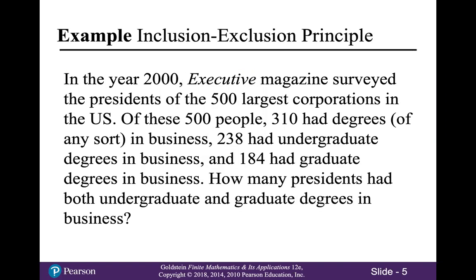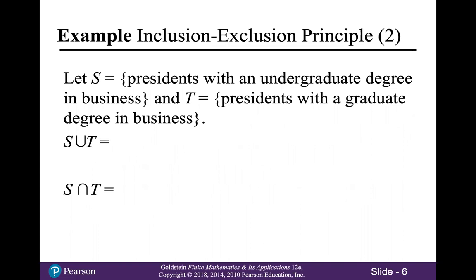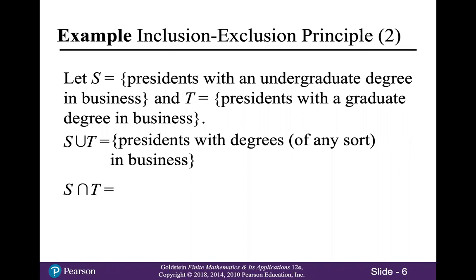For example, in the year 2000, Executive Magazine surveyed the presidents of the 500 largest corporations in the U.S. Of these 500 people, 310 had degrees of any sort in business, 238 had undergraduate degrees in business, and 184 had graduate degrees in business. How many presidents had both undergraduate and graduate degrees in business? So if we let S be the set of all presidents with an undergraduate degree in business, and T be the set of presidents with a graduate degree in business, then the set S union T is the set of all presidents with degrees of any sort in business.